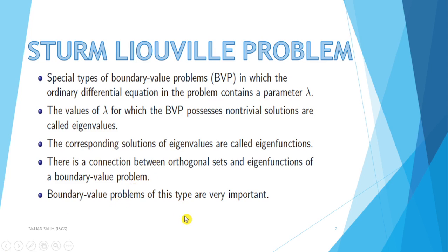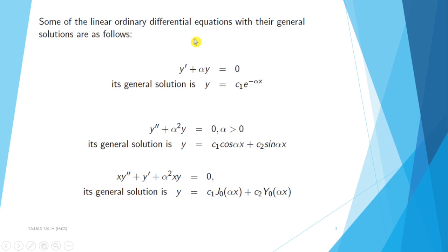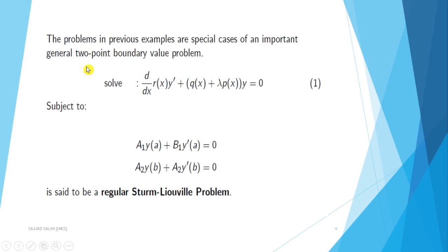Boundary value problems of this type are very important. Some linear ordinary differential equations with their general solutions are as follows: y prime plus alpha y equals 0, with general solution y equals c1 e to the negative alpha x. Also, y double prime plus alpha squared y equals 0 (alpha not equal to 0), with general solution y equals c1 cos(alpha x) plus c2 sin(alpha x). And x y double prime plus y prime plus alpha squared x y equals 0, with general solution y equals c1 J_0(alpha x) plus c2 Y_0(alpha x).